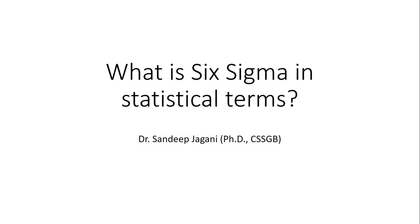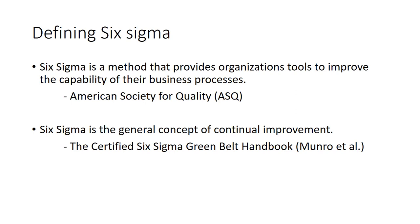Hello everybody, this is Sandeep Jagani, your operations and quality management friend. Today we are going to discuss what is Six Sigma in statistical terms. Let us start by defining what is Six Sigma. According to the American Society for Quality, Six Sigma is a method that provides organizations tools to improve the capability of their business processes. These tools are commonly referred to as DMAIC.